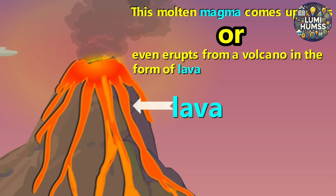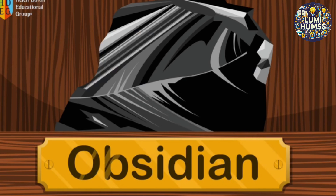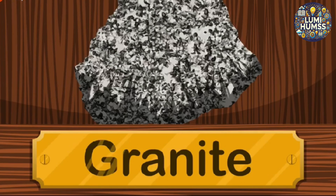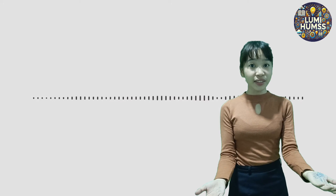Here are some examples of igneous rocks: anorthosite, obsidian, gabbro, granite, and basalt.